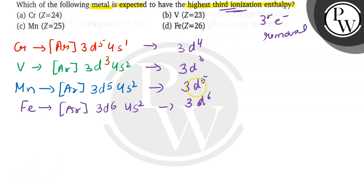Now to remove the electron from these configurations, it is hardest to remove from this configuration because it is half-stable. So it will need more energy. So the correct option will be option C. Thank you.